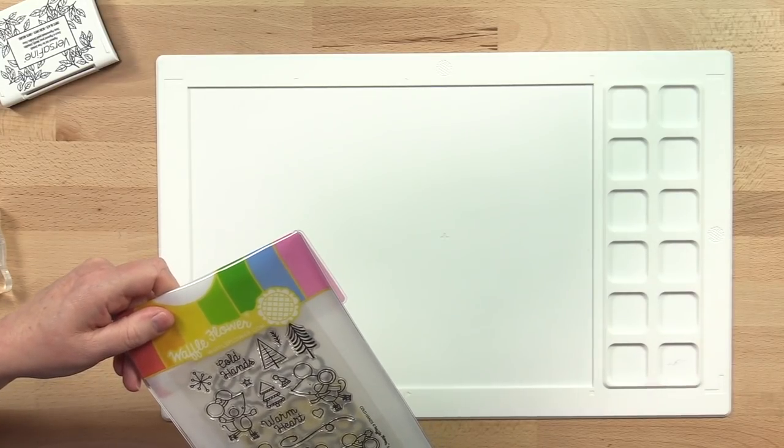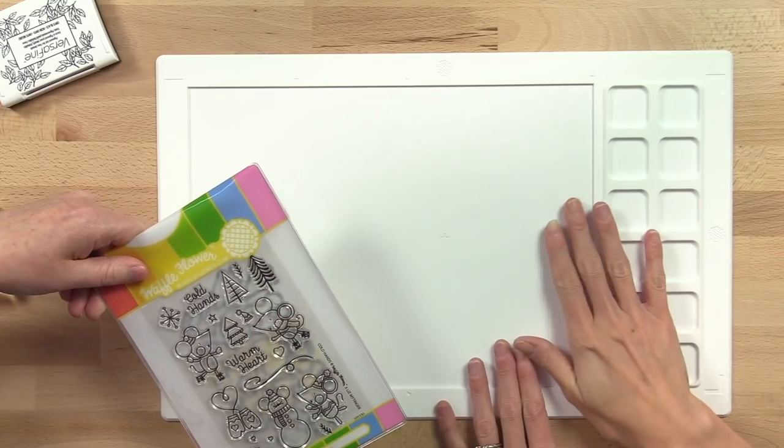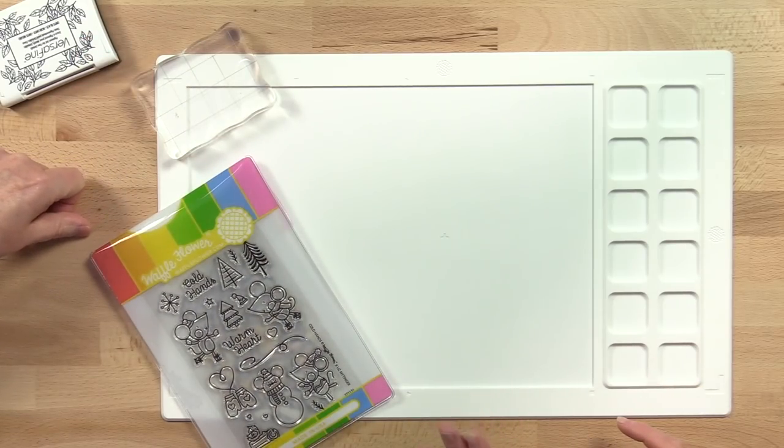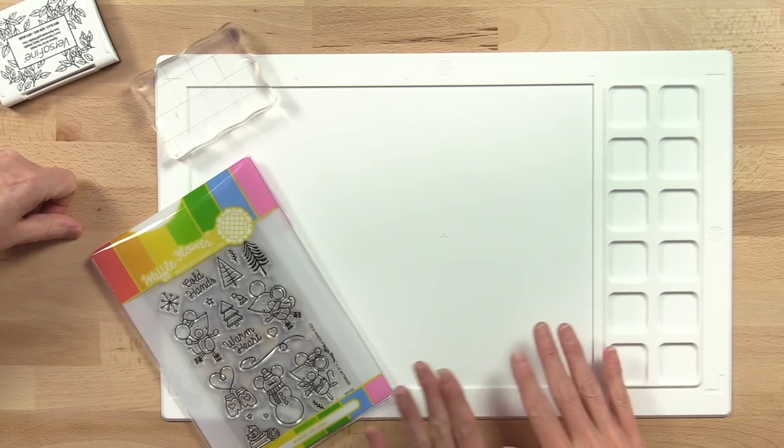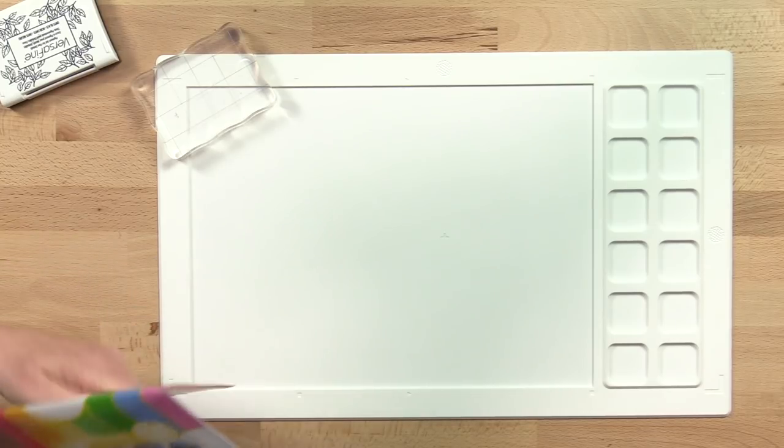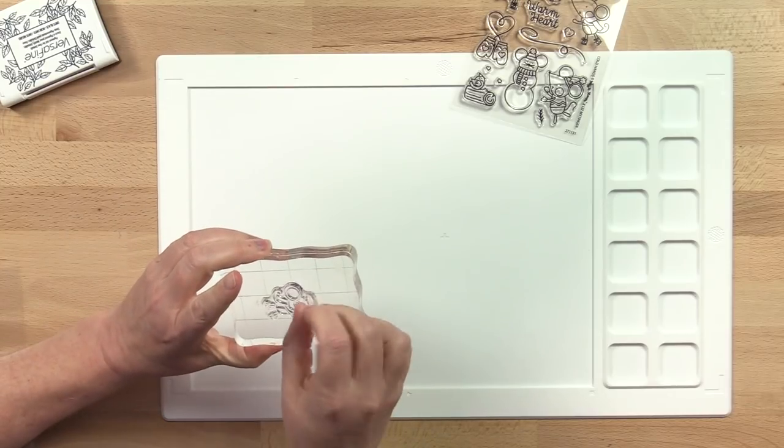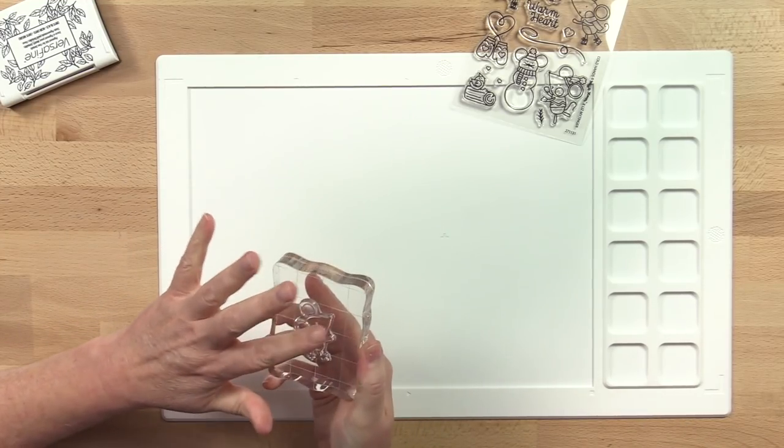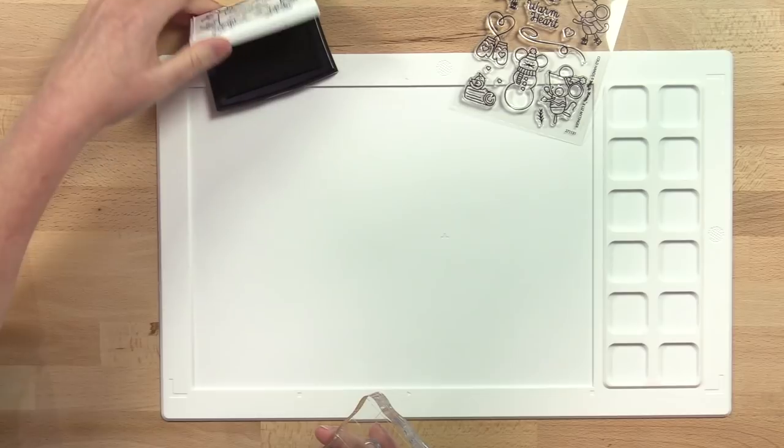We're going to start by just stamping on the mat and using an acrylic block to transfer the image. Sunshine is going to pull out a really great critter image. Any critter images are really great for mirrored stamping. You can pick out one of those cute little skating mice from the Cold Hands stamp set and just mount it on your acrylic block like you normally would. I found that VersaFine works really well for mirrored stamping, so that's the ink we're going to use today. Go ahead and just ink it up.